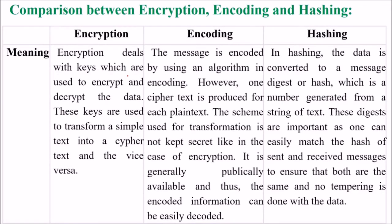Let us compare them. Encryption deals with keys which are used to encrypt and decrypt data, transforming plaintext into ciphertext and vice versa. With encoding, the message is encoded using an algorithm; one ciphertext is produced for each plaintext. The scheme used for transformation is not kept secret like in encryption — it is generally publicly available, and thus the encoded information can be decoded.